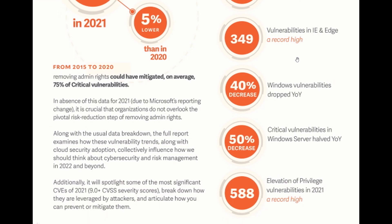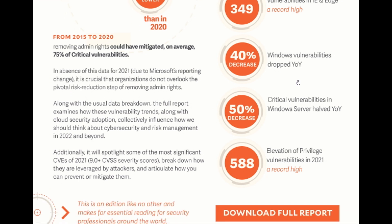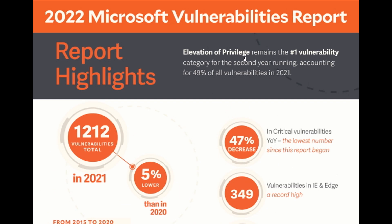There was a 40% decrease in Windows vulnerabilities year on year, and a 50% decrease in critical vulnerabilities in Windows Server, which halved year on year. As mentioned, elevation of privilege vulnerabilities in 2021 reached 588 found in Microsoft products — a record high — remaining the number one vulnerability category according to this report by Beyond Trust.